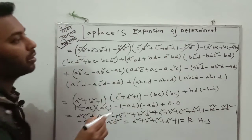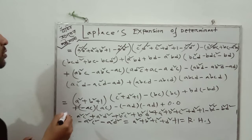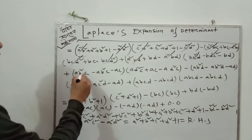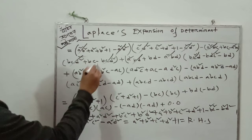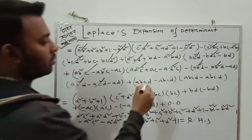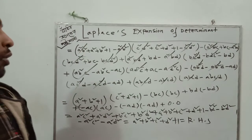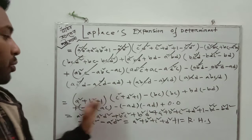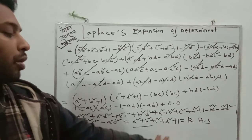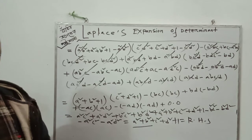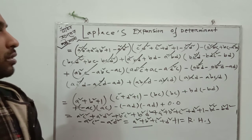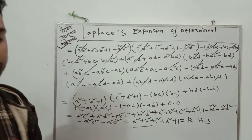Simplifying each cofactor value, we get: a²b² + a² + b² + 1 − a²b² = a² + b² + 1, and similarly for the other terms. Multiplying all values and simplifying, we get a² + b² + c² + d² + 1, which equals the right-hand side. So this is the proof. We should apply this Laplace expansion method when the determinants are of higher order.